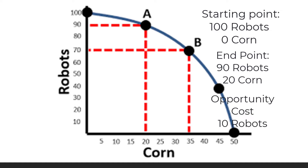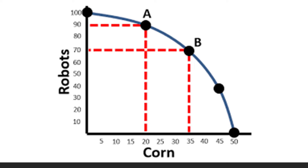Let's do another example — what is the opportunity cost of moving from point A to point B? At point A, I have 90 robots and 20 corn. At point B, I have 70 robots and 35 corn. I clearly did not give up corn, so what did I give up? My cost has to do with robots. I had 90 at point A and 70 at point B, so my opportunity cost is 20 robots.